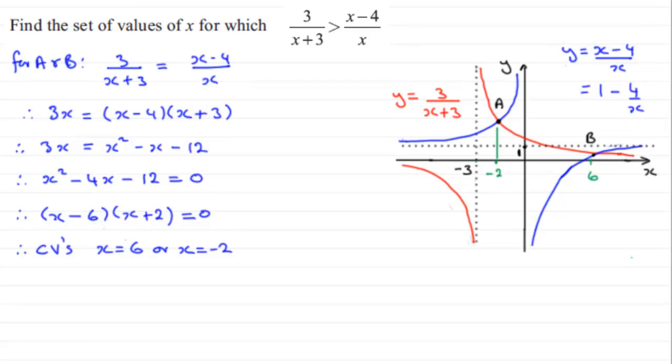So in answer to our question, we know that if we're to solve this equation, then if 3/(x+3) is to be greater than (x-4)/x, then I can see that x has to be between -3 and -2 because that's where the red graph is above the blue graph. So we've got -3 < x < -2 there. x is between -3 and -2.